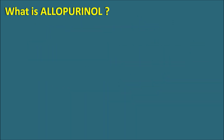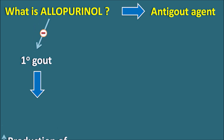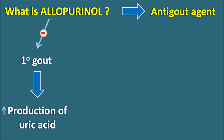What is allopurinol? Allopurinol is one of the anti-gout agents. This drug can be used in the treatment of primary gout, where there is an increased level of uric acid resulting in hyperuricemia. These raised levels of uric acid can form crystals within the joints, producing gouty arthritis. Primary gout is a metabolic disorder where there is increased production of uric acid; in such cases allopurinol can inhibit the synthesis of uric acid, thereby decreasing uric acid levels.